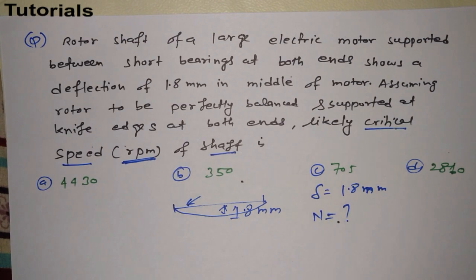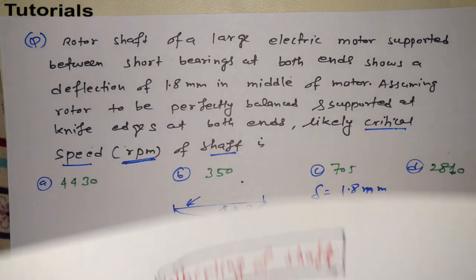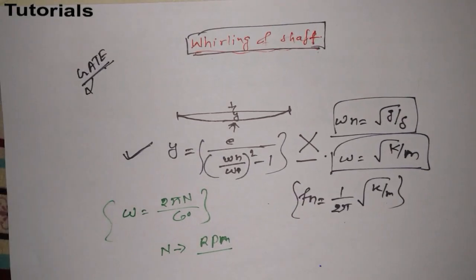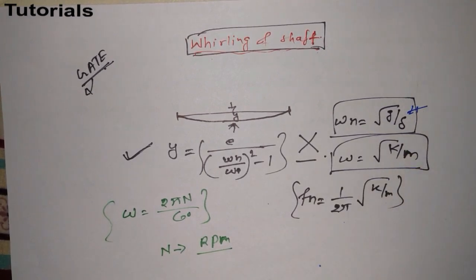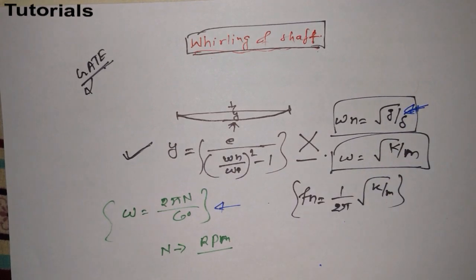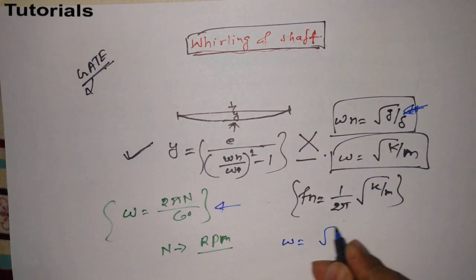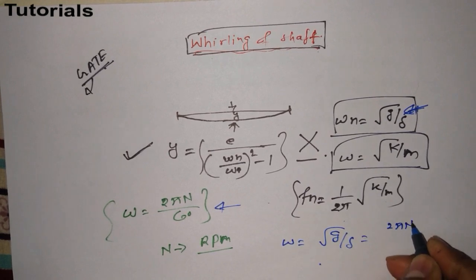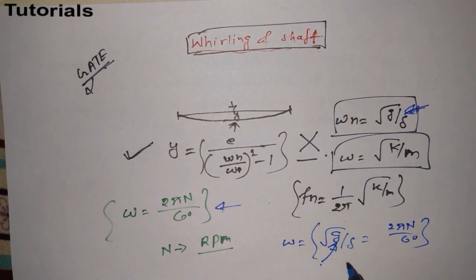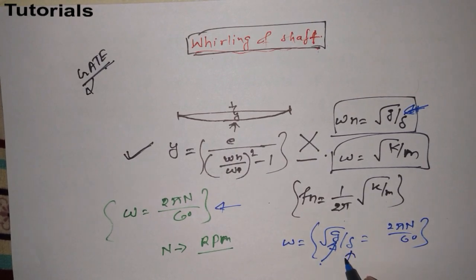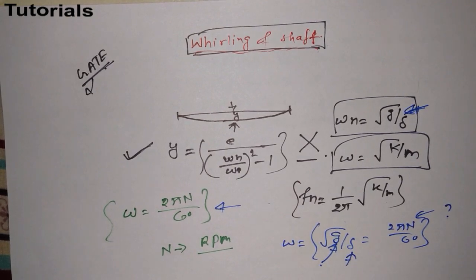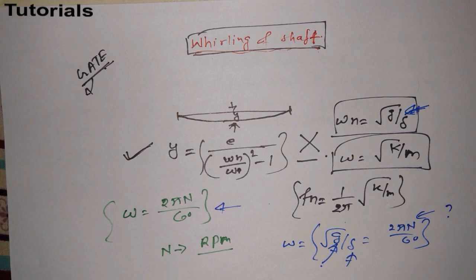Let's review the formulas again. Only one formula can help us here: ωn = √(g/δ). And since ω = 2πN/60, we substitute the value of g — acceleration due to gravity — and δ, and we can find N. We have everything needed to solve this numerical problem.